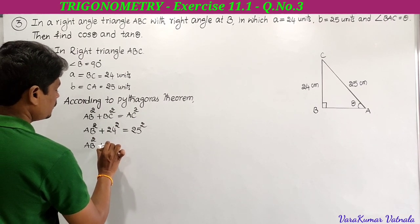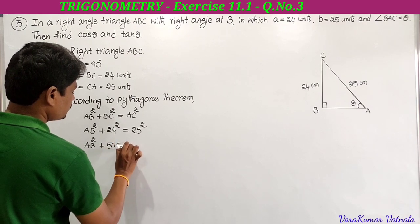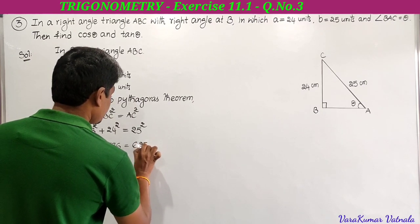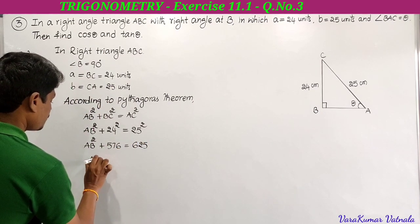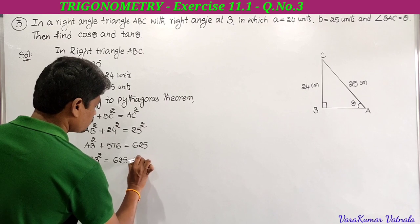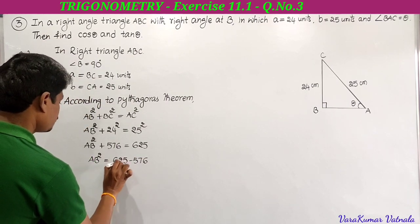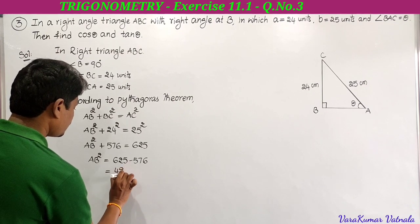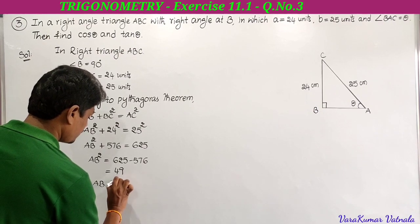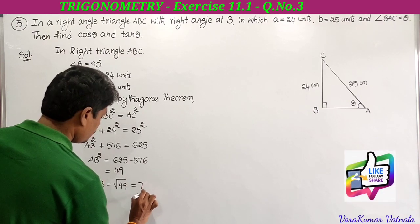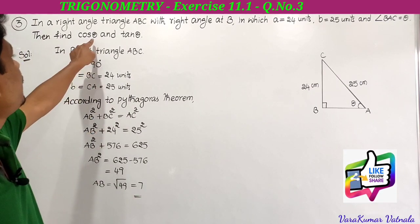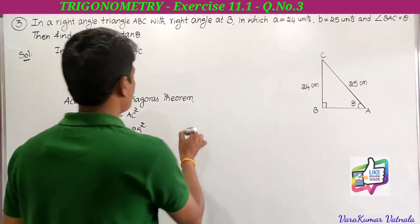24 square is 576, 25 square is 625. So AB square equals 625 minus 576, which is 49. Therefore AB equals square root of 49, which is 7. So AB equals 7 units.